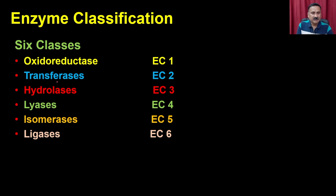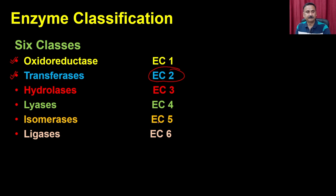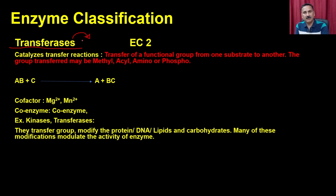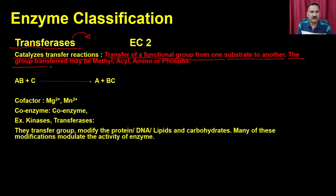The next class is called transferases, belonging to the group EC2. As the name suggests, transferases transfer a group from one substrate molecule to another substrate molecule — catalyzing transfer reactions of a functional group from one substrate to another. The groups transferred include methyl groups, acyl groups, amino groups, or phospho groups.